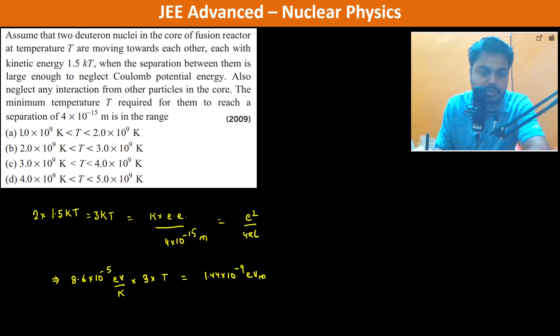It means e² is 1.44×10^-15 meter divided by 4×10^-15 meter. So now if you see, electron volt meter meter is gone.